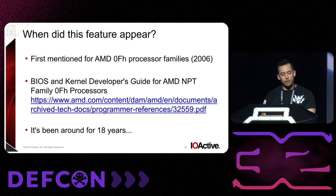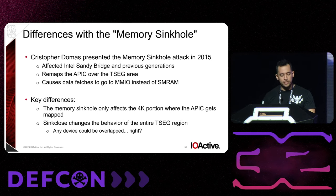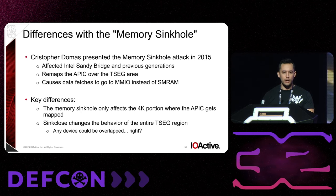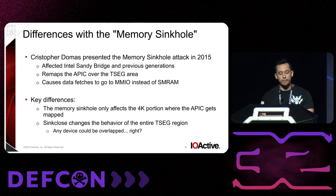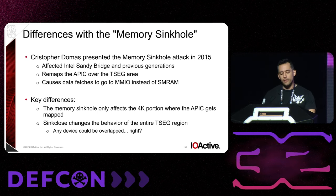For people familiar with BIOS security, they probably remember this vulnerability presented by Christopher Domas in 2015, called the memory sinkhole attack. He was able to remap the APIC — a specific device — and overlap it with the TSEC area, causing the same effect: data fetches going to MMIO instead of SMRAM. The difference here is that attack was only limited to the APIC and only affected the 4K region where the APIC was overlapped. The T-close behavior changes how the entire TSEC works — any device in theory could be overlapped, because we just direct any access to the MMIO space.